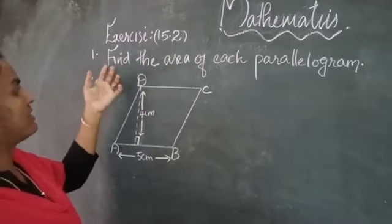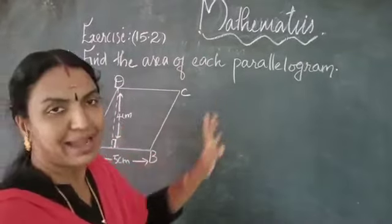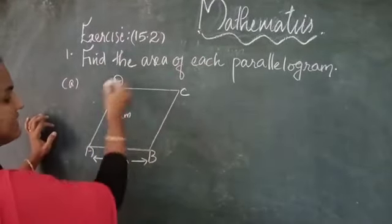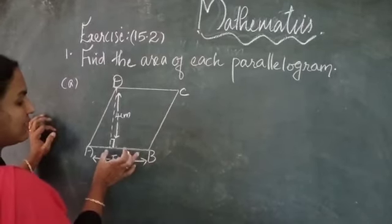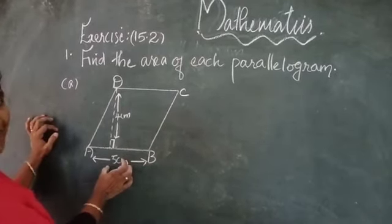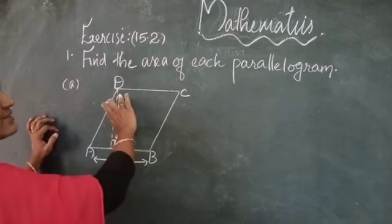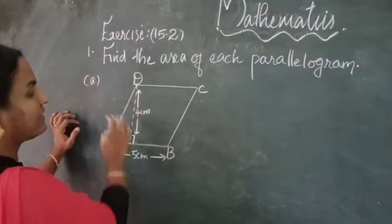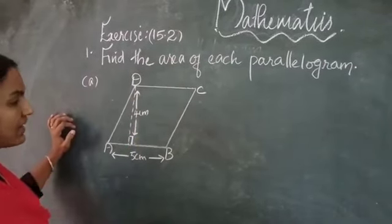Question number 1: Find the area of each parallelogram. Option A: ABCD is a parallelogram. AB, the base, is given as 5 cm and the perpendicular height is 4 cm. We have to find the area of parallelogram ABCD.